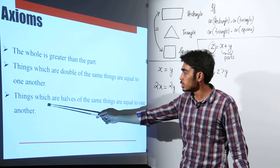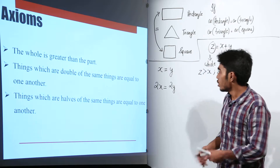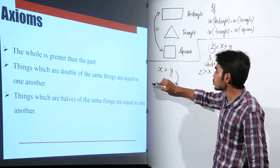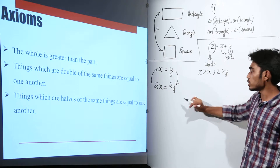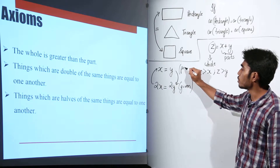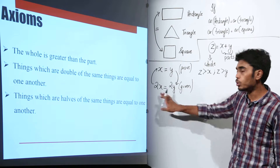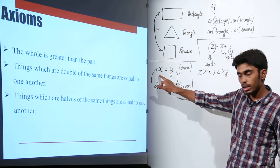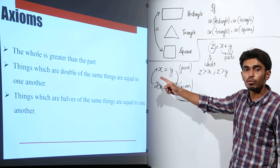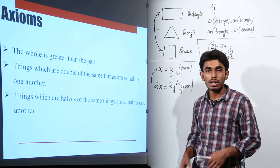The next axiom says: things which are halves of the same thing are equal to one another. If 2x equals 2y is given, the half of 2x would be x and the half of 2y would be y. So we can easily say: if 2x equals 2y, then the halves are also equal to one another. These were all the axioms given by Euclid.